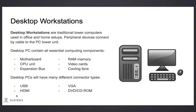Desktop workstations are traditional tower computers. They're used primarily in office and home setups. Peripheral devices connect to the desktop by cable connections to the PC tower unit. Desktop PCs contain all the essential computing components, including the motherboard, expansion bus, RAM memory, video cards, and cooling fans.